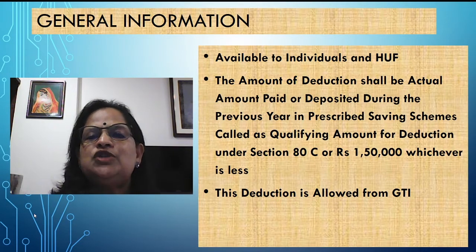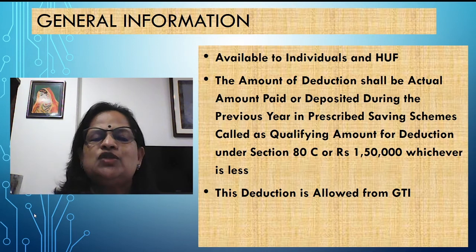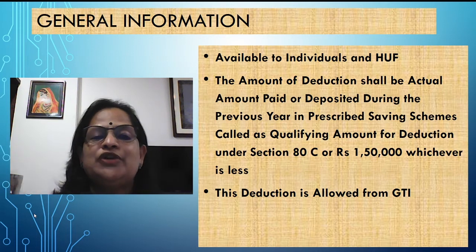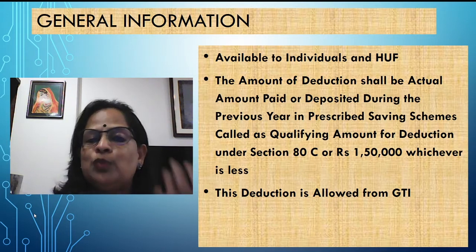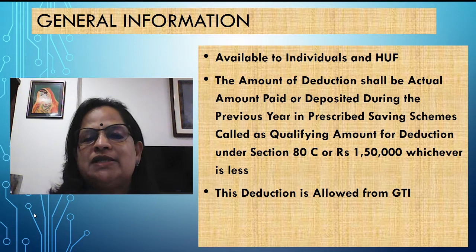I will explain with the help of a PowerPoint presentation. The problems for this I will be explaining with some other module, or I will take it as a combined module where I can include different sections. The general information: this deduction is available to individuals and Hindu Undivided Families (HUF). Certain deductions everybody can claim, and certain deductions only individuals and HUF can claim. This is one such deduction — only individuals and HUF can claim this.